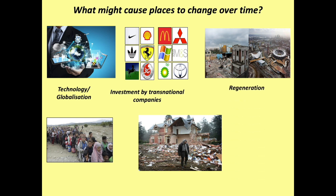The third factor is regeneration — taking a place from derelict on the left to renewed on the right. The fourth is migration, the movement of people. I'd like you to complete a table on your worksheet explaining how you think these factors might make a place change. For example, with technology and globalisation, as places become more connected, how might they change?